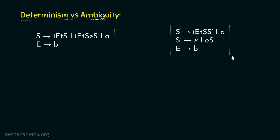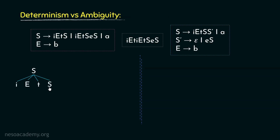Say we would like to generate the sentential form: i, e, t, i, e, t, S, e, S. Let's observe how many ways we can derive this in both the deterministic and non-deterministic versions. Beginning with the non-deterministic version: starting from start symbol S, using the rule S → i e t S, we derive i, e, t, S. Then for the remaining S, we apply S → i e t S e S, obtaining i, e, t, S, e, S. The yield is i, e, t, i, e, t, S, e, S — and we have derived this intermediate form.